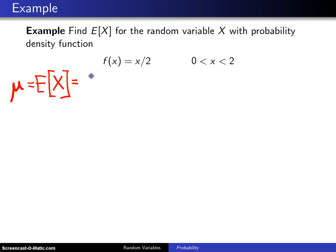This will be the integral over the support of x times f of x dx, and we usually signify that support by script A. So in this particular case, the support goes from 0 to 2, and we have x multiplied by the probability density function, which is x over 2 dx.